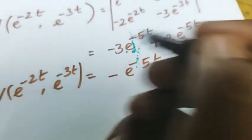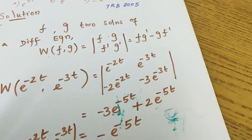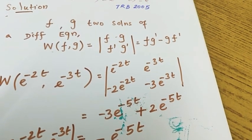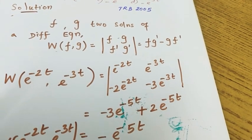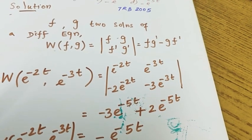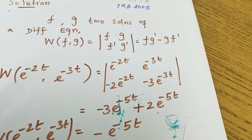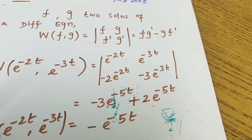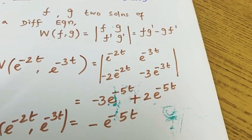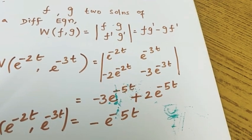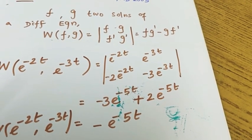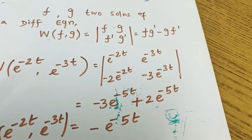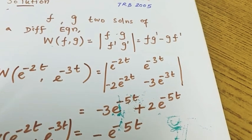So the Wronskian of e^(-2t) and e^(-3t) is −e^(-5t). Since the determinant value is not equal to 0, the solutions are linearly independent.